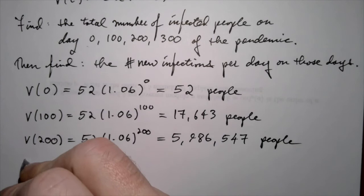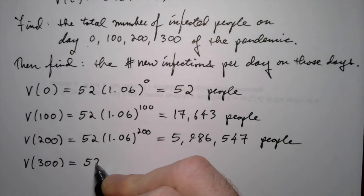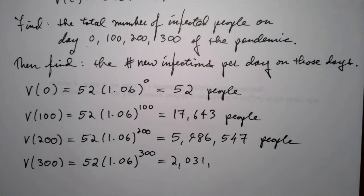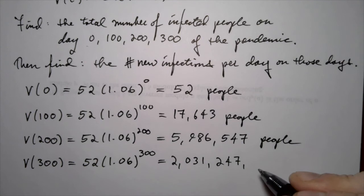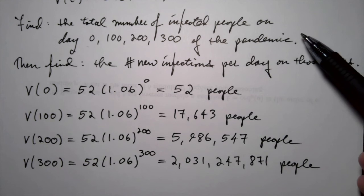Finally, on day 300, plugging in t = 300 gives approximately 2,031,247,871 people infected — almost half of humanity. That answers the first question about total infected people on these days. We now need to find the number of new infections per day.